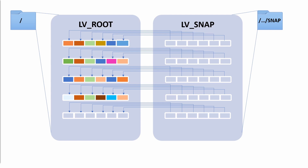What happens if we modify some data on the source disk? First, that data gets copied over to the snapshot logical volume. Then the data gets modified or written on that block, and the pointer is removed. Now when we look at that snapshot and access that block, inode, or file, it doesn't point back to the root logical volume — it has its own copy of that data.